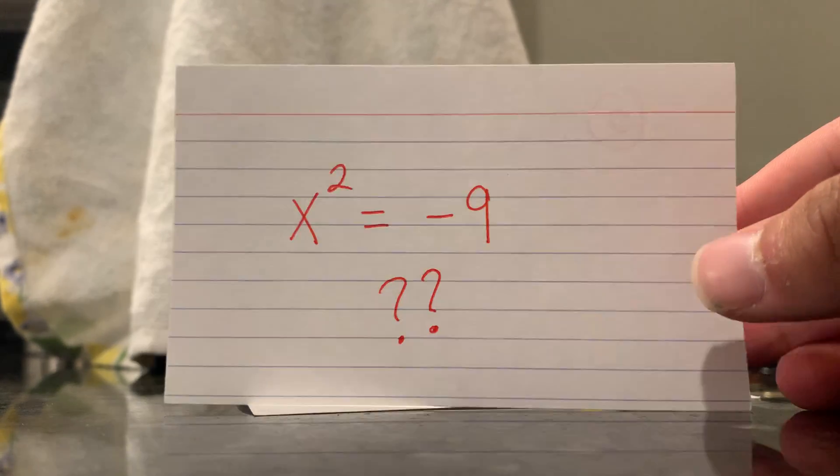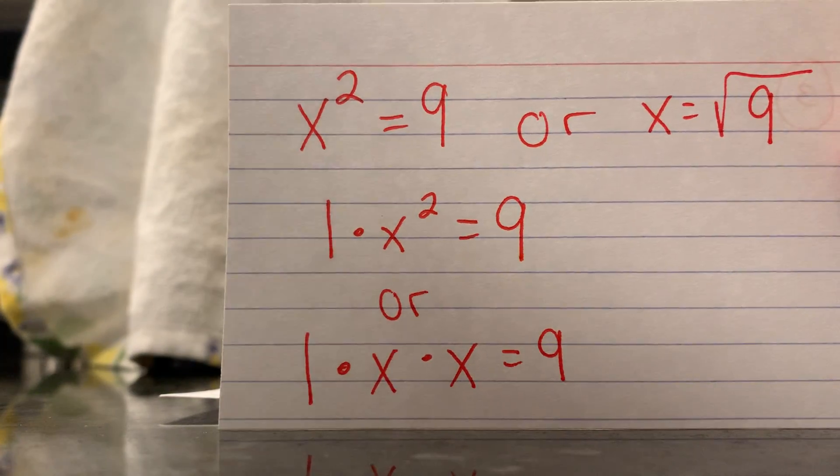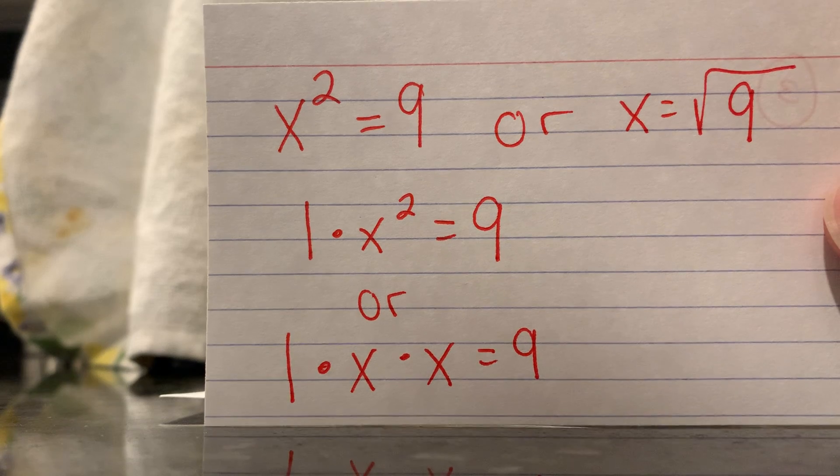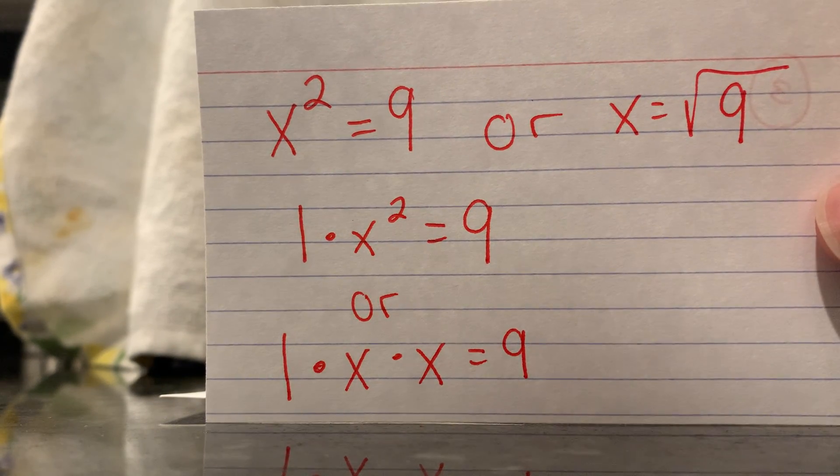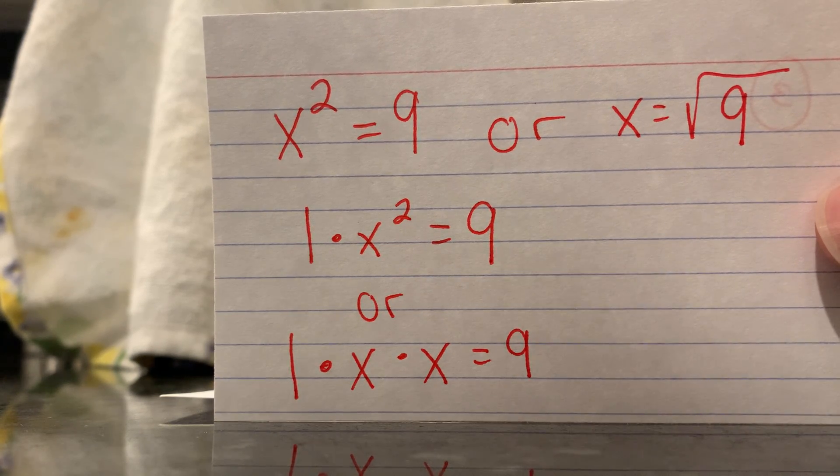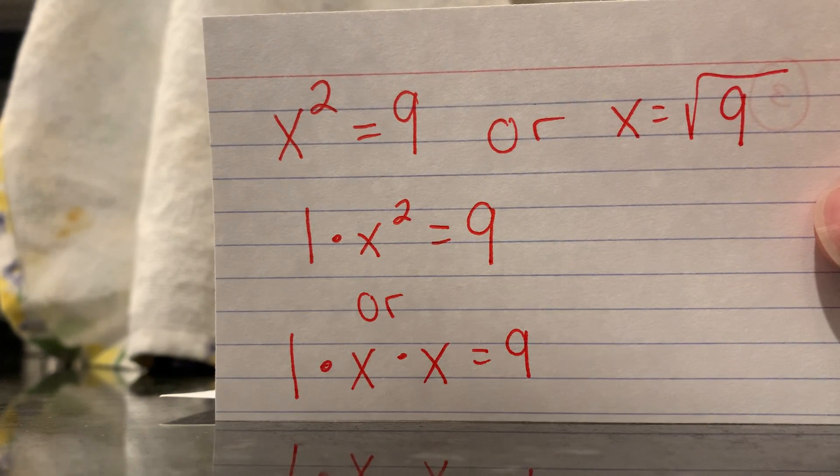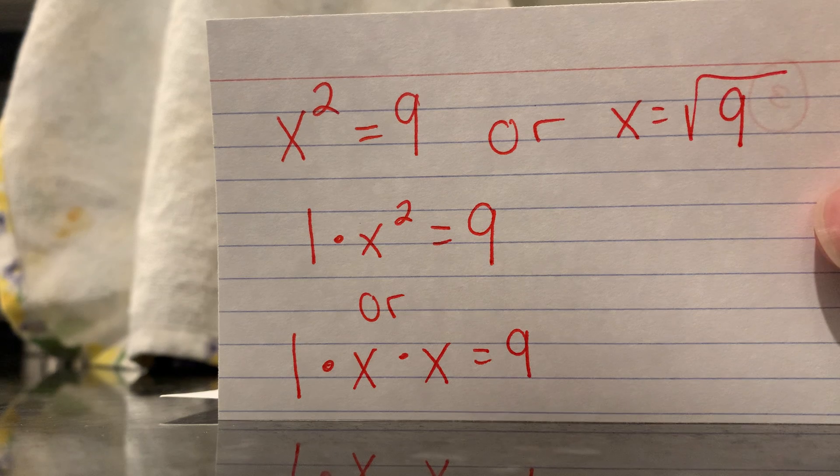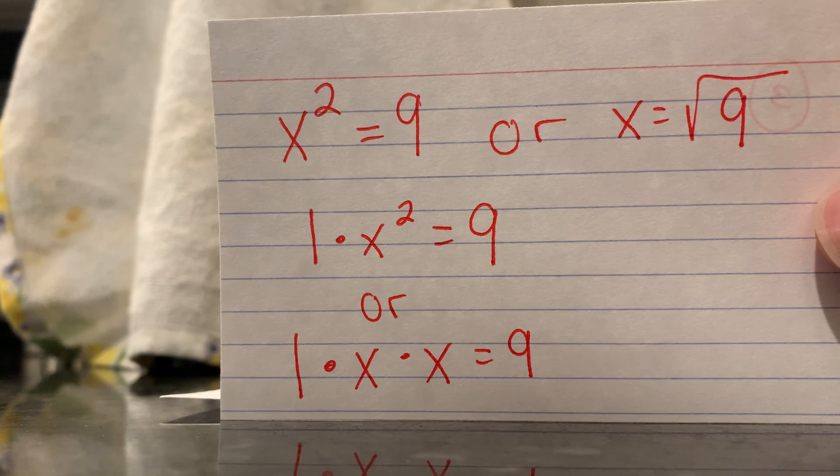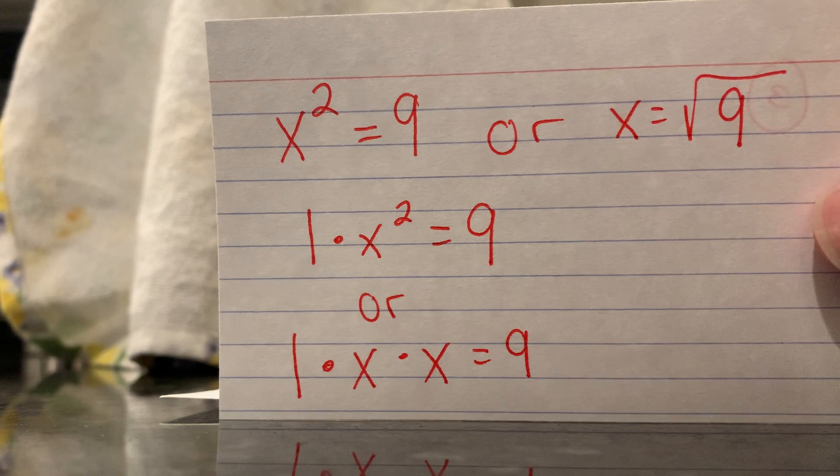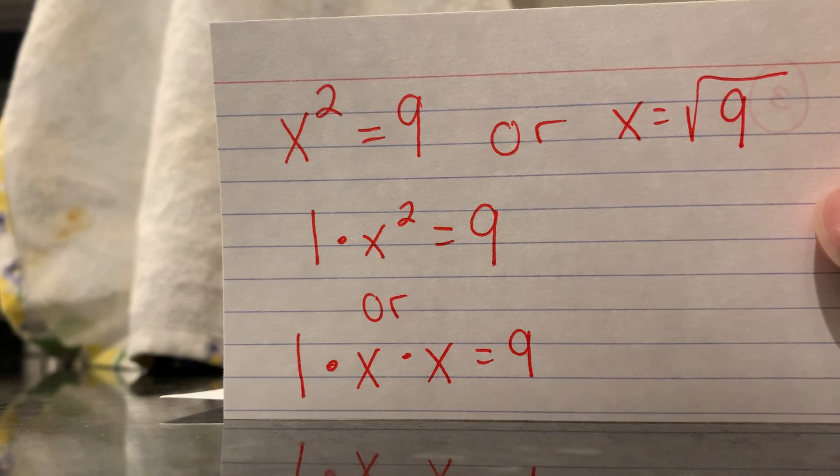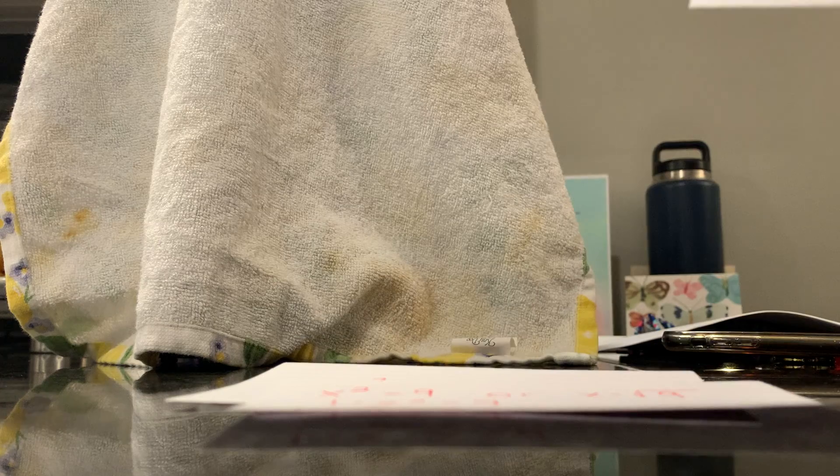So back to my algebra one example. What transformation of x, when applied twice, turns one to nine? The two answers are three and negative three. That means scale by three or scale by negative three and flip to get nine. This is the same for x squared equals negative one or x equals the square root of negative one.